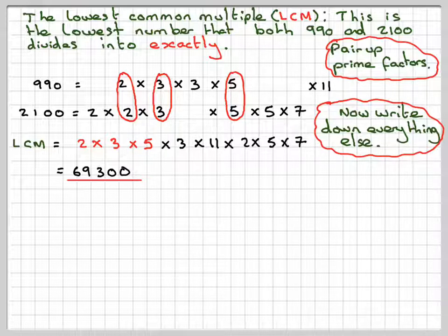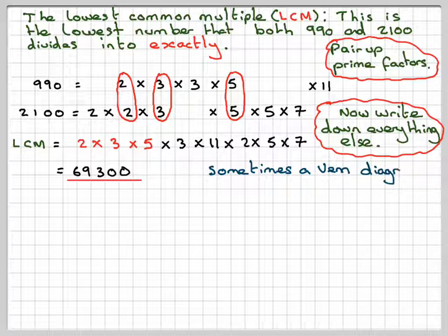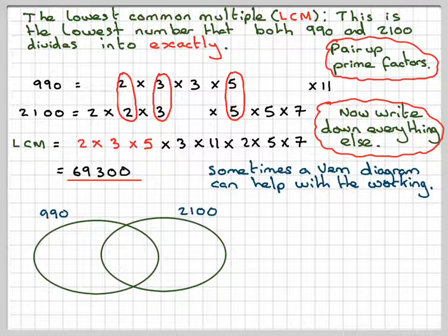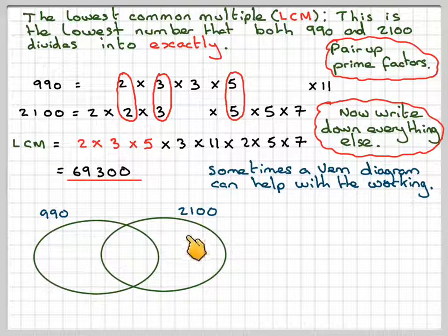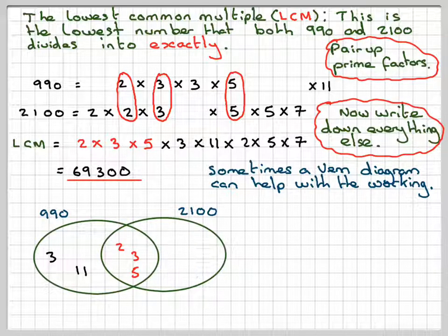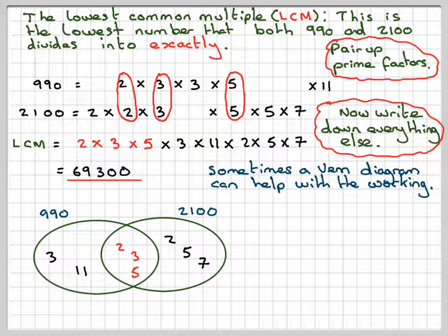Now, sometimes people like to use a Venn diagram to do the working. You draw a Venn diagram with two intersecting sets. We call this one for 990 and this one 2,100. In here you put the things which are common to both, listing only once: 2, 3, and 5. Here you're going to put 3 and 11. And here you're going to put 2, 5, and 7.